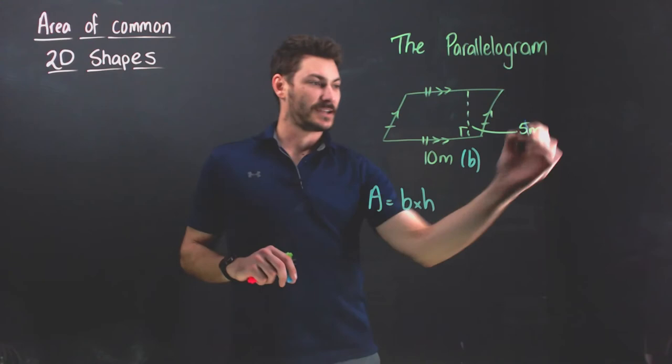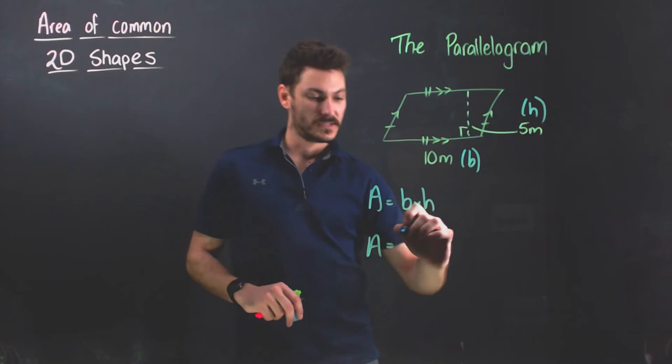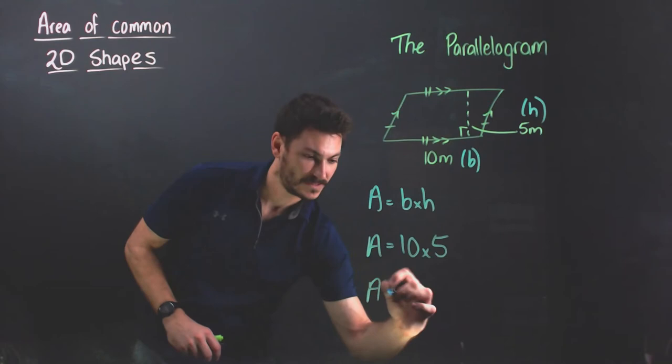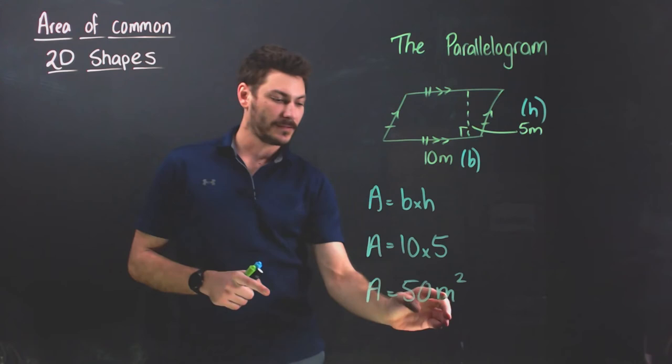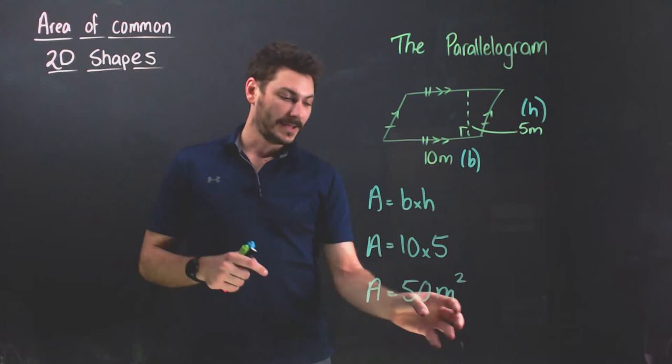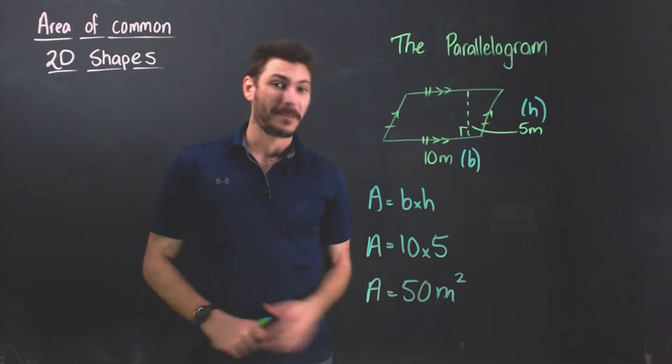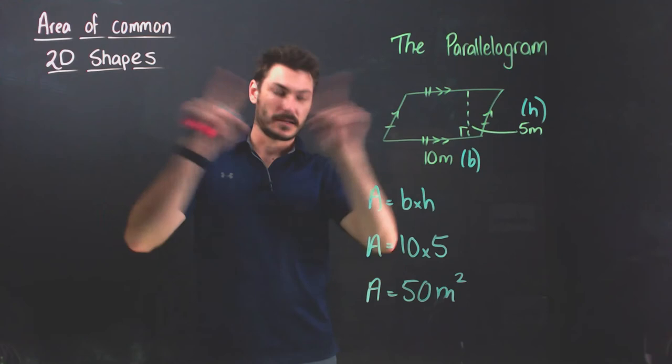I sub them into the equation: A equals B which is 10 times H which is 5. A equals 10 times 5, that's going to be 50. In this case it's not centimeters like my other examples, it's meters squared. Notice as well, just as a quick aside, I'm not actually squaring anything. This squared is simply to remind me that I'm using two dimensions so it's area. It is not 50 squared or anything like that. The answer is 50 meters squared. One meter squared is a meter by a meter, so a square with a meter beside, I have 50 of them to fit in this shape.